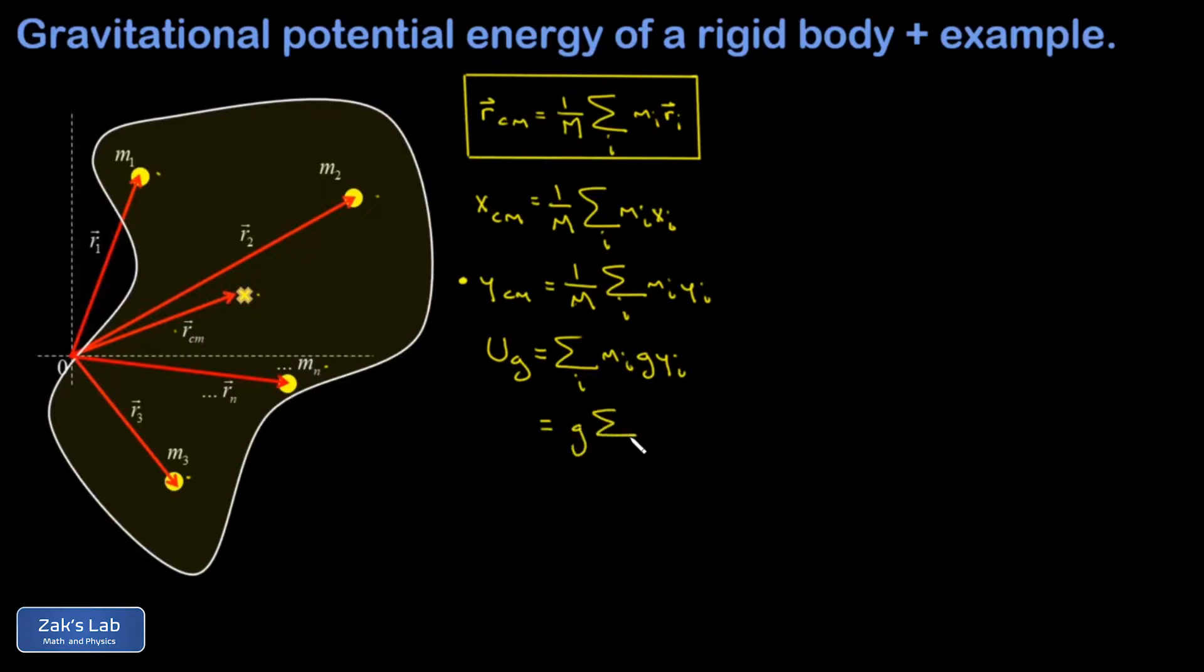And I end up with g times the sum of mi times its y coordinate yi. Now I recognize that expression from the center of mass y coordinate: the sum of mi times yi is equal to m multiplying the y center of mass coordinate. And to write things in a little more familiar order, I have capital M g y center of mass and we've got our formula for the gravitational potential energy of a rigid body.